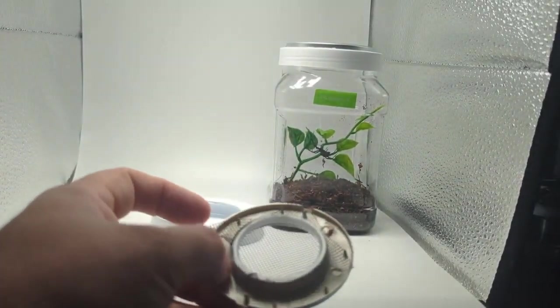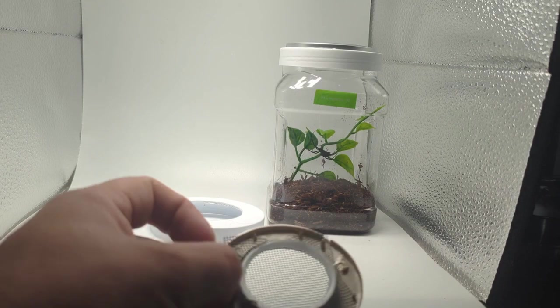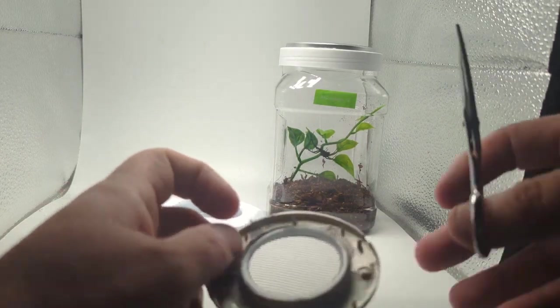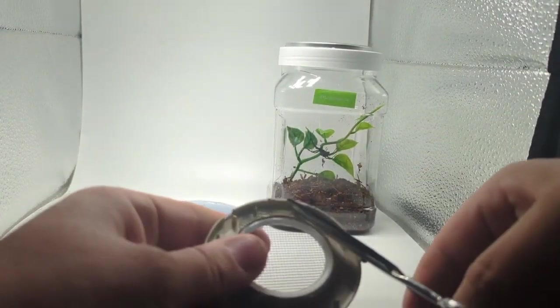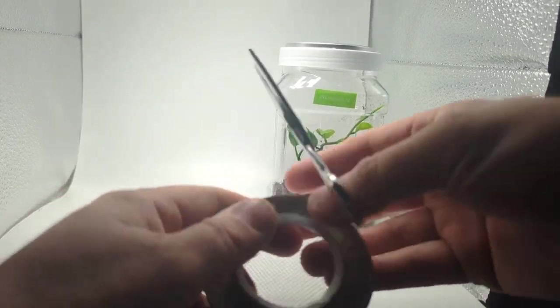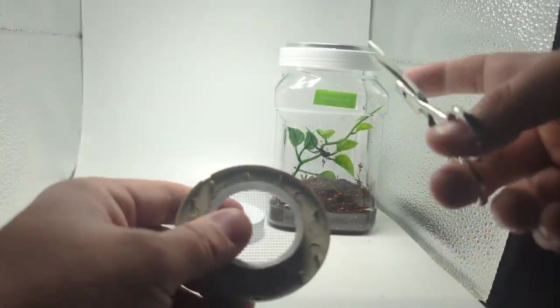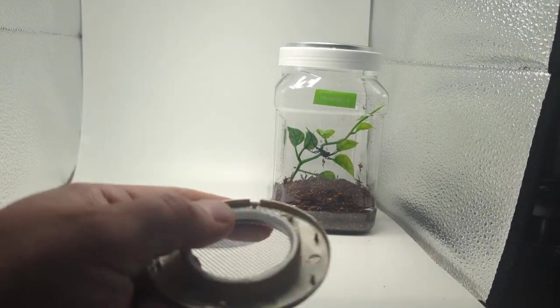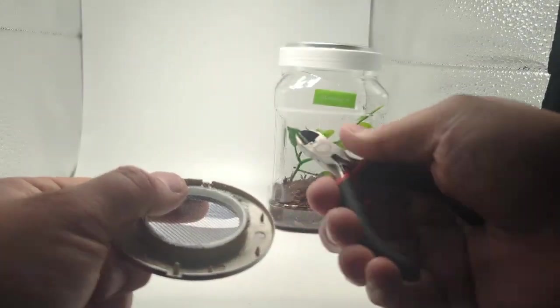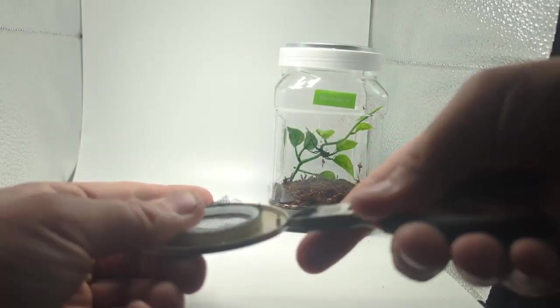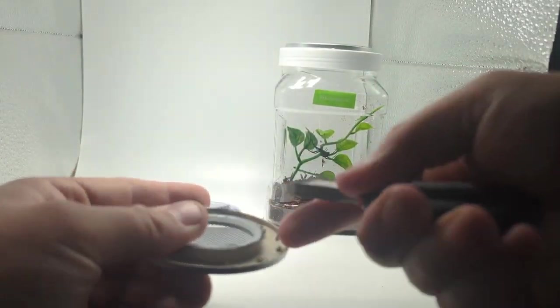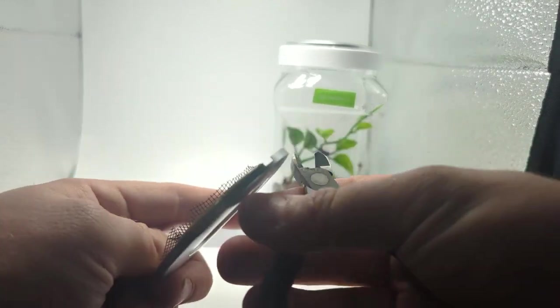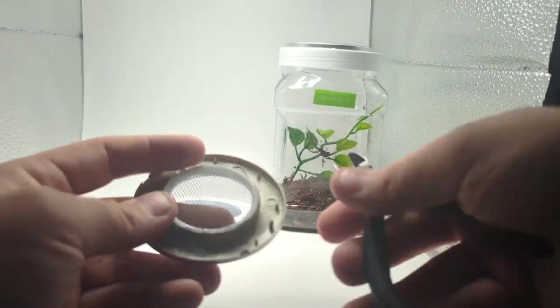Again, doesn't have to be fancy. This is all going to be hidden. And now just so it sits more flush, what I'll do is I'll take some little cutters and I'll cut off these two little pegs by the holes because they're supposed to kind of grip onto the fabric. And what they'll do is they'll cause it to sit a little higher up on the lid, and I just don't like the look of that. I like it to be more flush, so I'll cut those off.